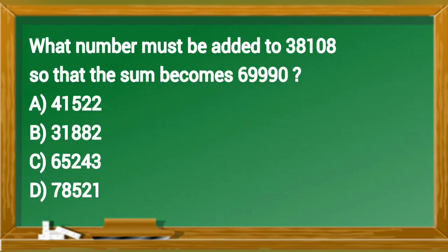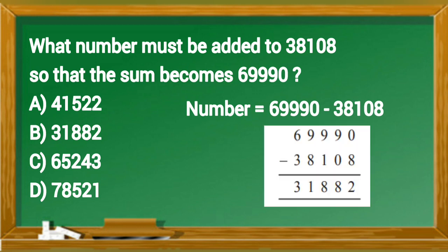What number must be added to 38,108 so that the sum becomes 69,990? To find the required number, given number 38,108 is to be subtracted from 69,990. So option B is correct answer.